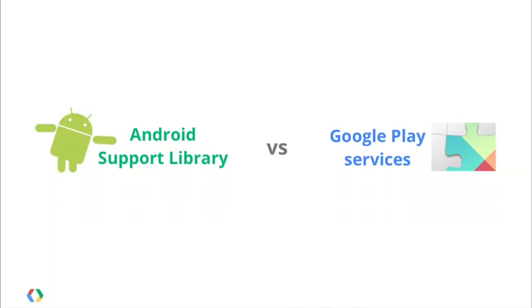A few people have asked why we have both Play Services and the Android Support Library. It's in the names really. Google Play Services is supporting our Play ecosystem, making sure that you can use those APIs. The Android Support Library is an open source library for the Android ecosystem — delivered directly to developers to include in their applications with the source — and you can use it on all devices.